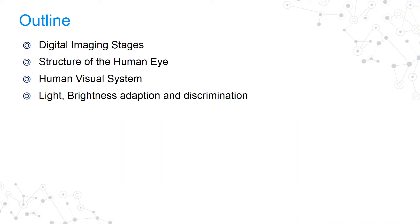In this class, we would be covering the basic steps of digital imaging stages. We would see the structure of a human eye and how we perceive the information or an image. And then we will study the human visual system in detail.